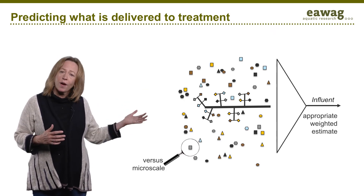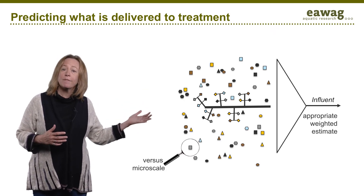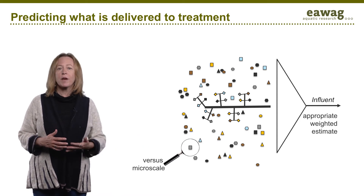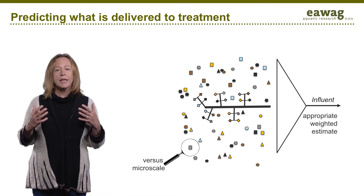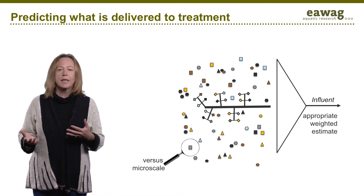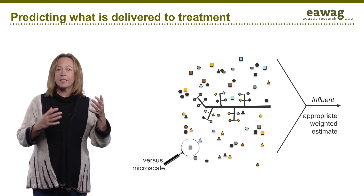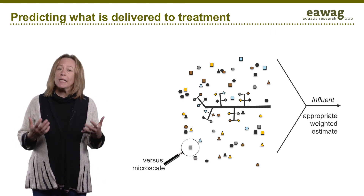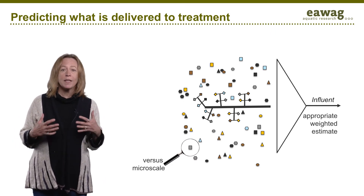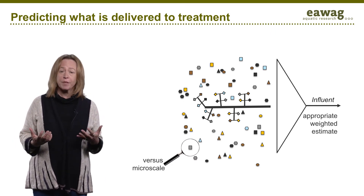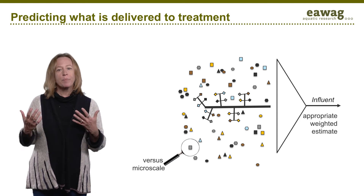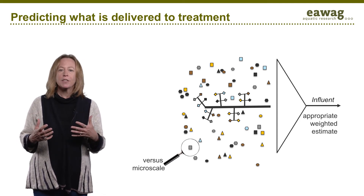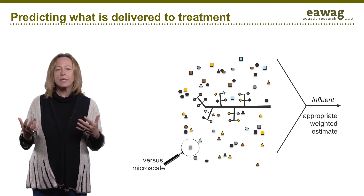In contrast, this is fecal sludge. You see that each house is much more variable, and in addition, it is collected batch-wise and delivered to treatment. So what we need is ways to average out these complexities so that we can make predictions of what we need to manage at the community scale.